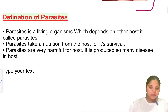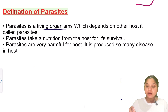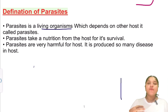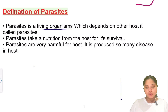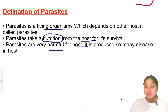Let me give you a very simple example. A parasite is a living organism which depends on another host for survival — it cannot survive on its own, so it depends on another organism. That is known as a parasite. Parasites take nutrition from the host for their survival, and are very harmful for hosts, producing many diseases in them.